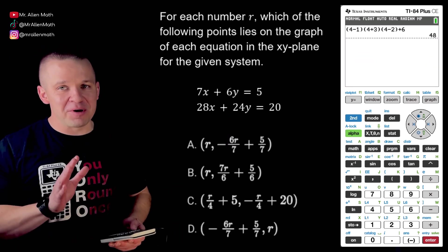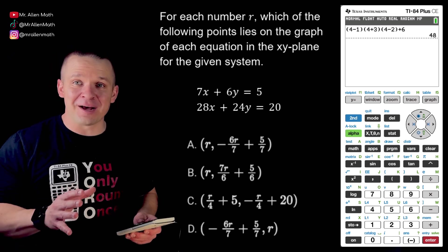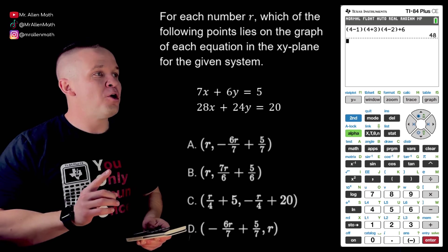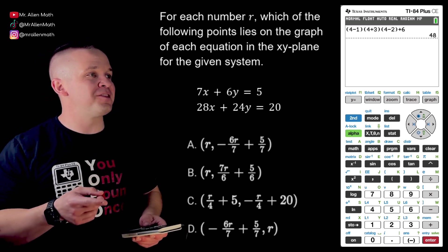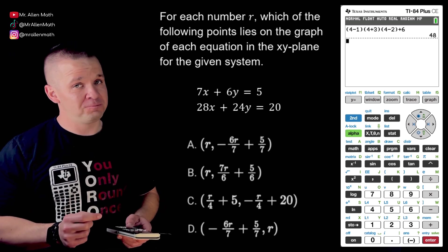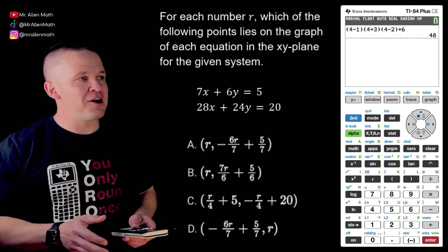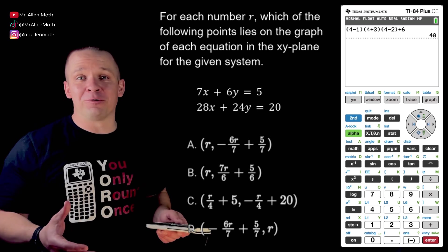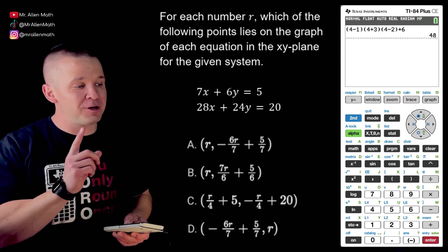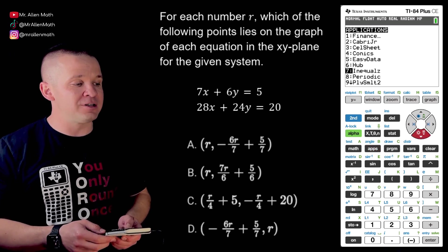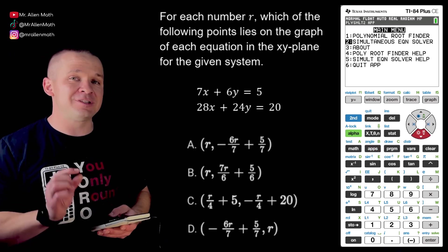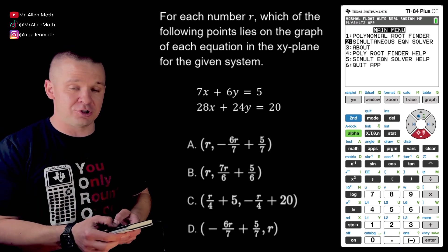All right this next one is a bit of a doozy here and you're going to be so happy that you learned about this app that we got going on in this one. So it says for each real number r which of the following points lies on the graph of the equation in the xy plane for the given system. Okay honestly if I saw this one when I was in high school I probably would have skipped it. I would not know how to do it. It's really tricky to do just by hand anyways but if you guys hit apps right now and you arrow all the way down to number nine or just hit the number nine hit enter and go to simultaneous equation solver.